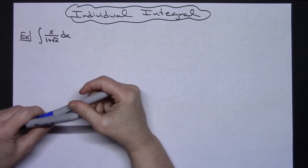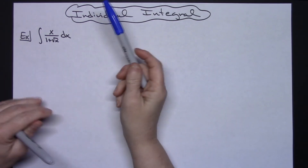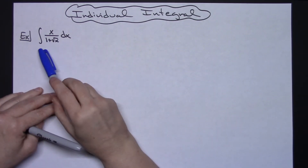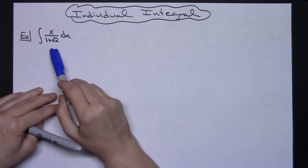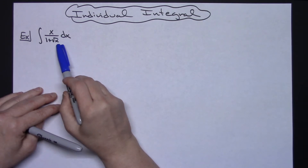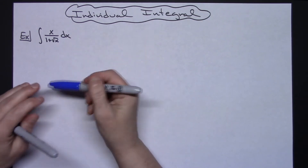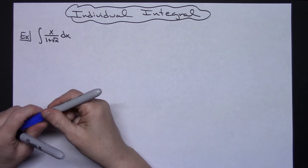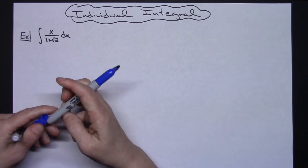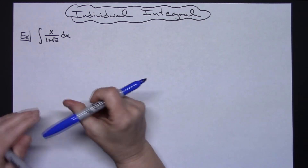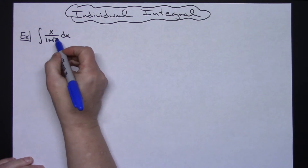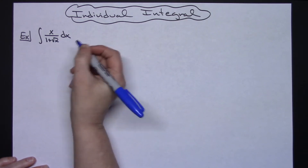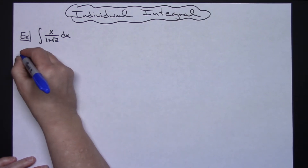In this video I'm going to be working out the integral of x over 1 plus square root of x dx. Initially you might think that a u substitution is going to work, and so you would probably look at that denominator and try letting u be the square root of x. That's the approach we will start out with here.